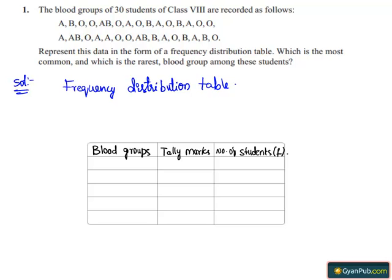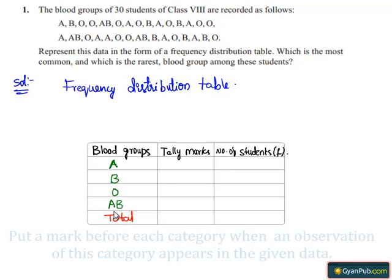Let's take the blood groups: A, B, O, AB. And here, we write the total. Let's tally it.